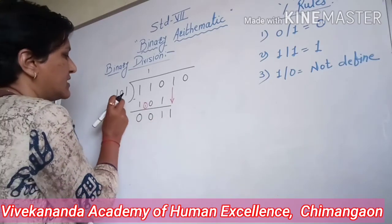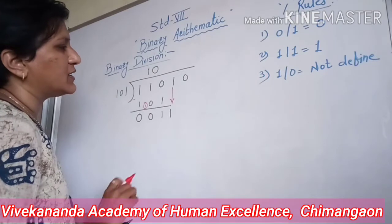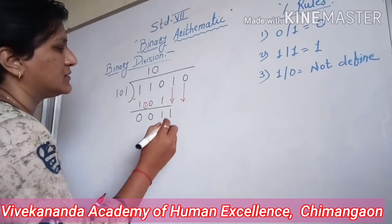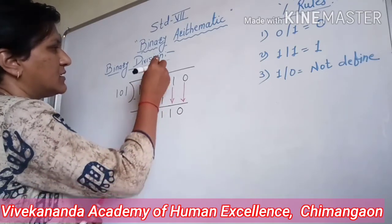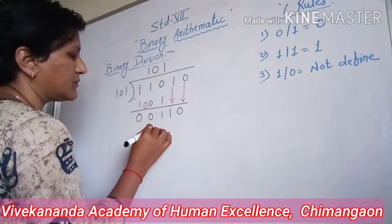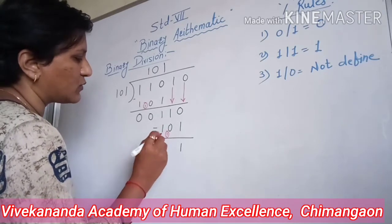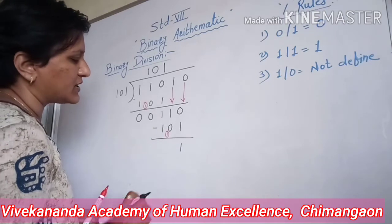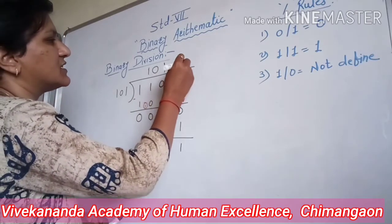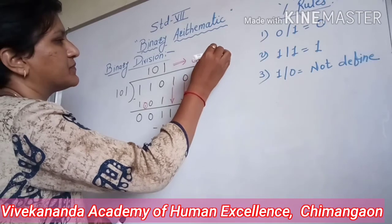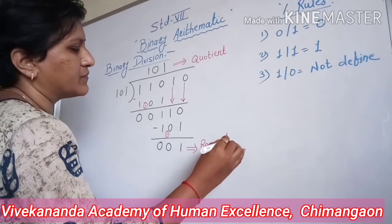Since division was not possible with 11, I write 0 in the quotient and bring down the next digit, making the number 110. Dividing 110 by 101: 0 minus 1 gives 1 with a borrow carry, 1 minus 0 minus 1 gives 0, and 1 minus 1 gives 0. The final quotient and remainder are thus obtained.